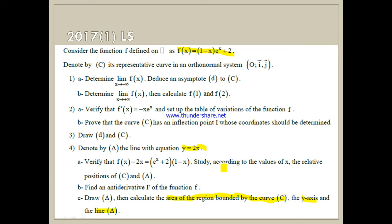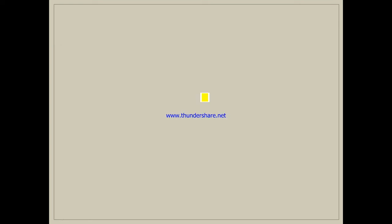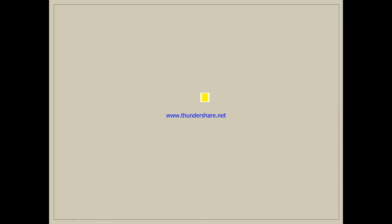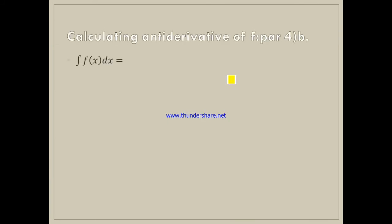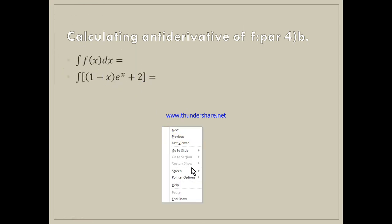So the area is between C, the y-axis, and the line delta y = x. Calculating the antiderivative first, because the problem asks us to find an antiderivative — capital F — of small f. We have to find the antiderivative of this function. Because these two functions are continuous, we can separate the integral into two integrals.